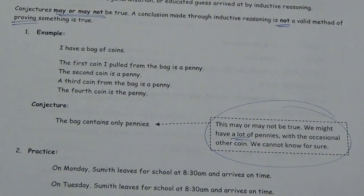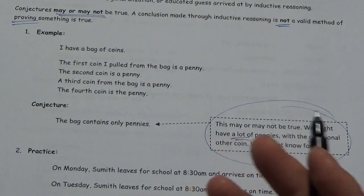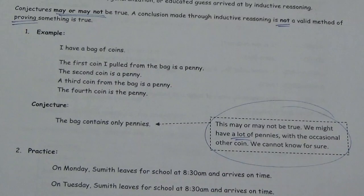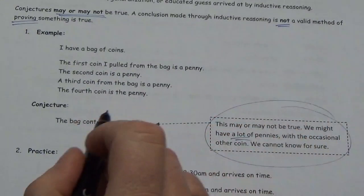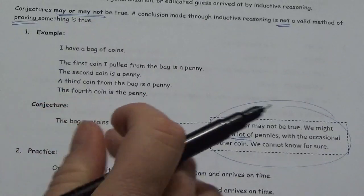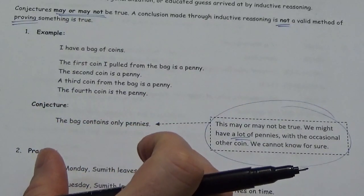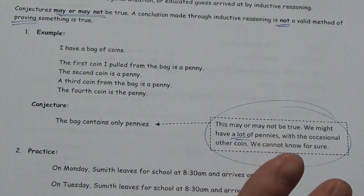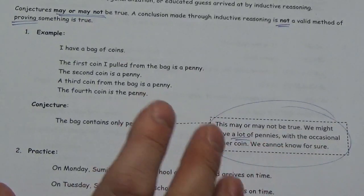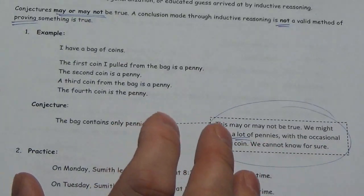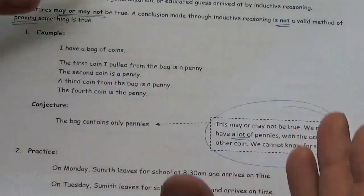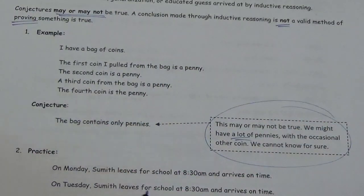It might just have a lot of pennies in it. So it might be that the probability of pulling out a non-penny coin is just really low. So that's the problem with conjectures. Now, just that we're not, you don't make a mistake here. Conjectures are important. They're the sorts of things that lead us into research.